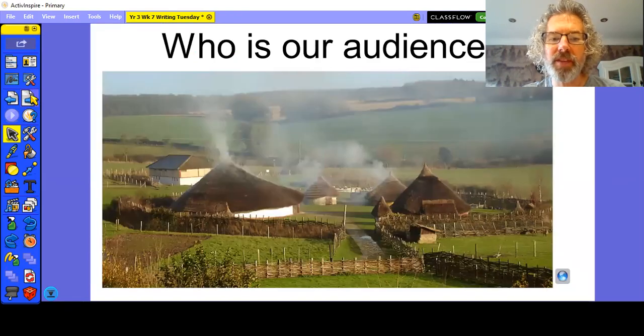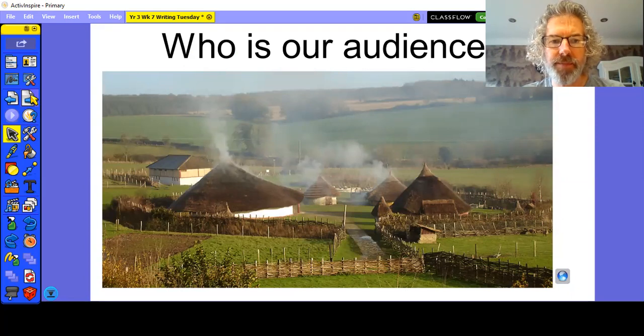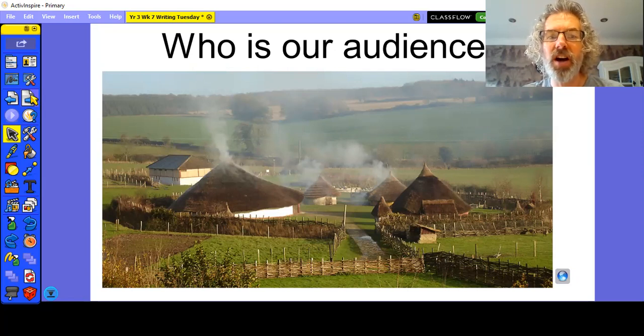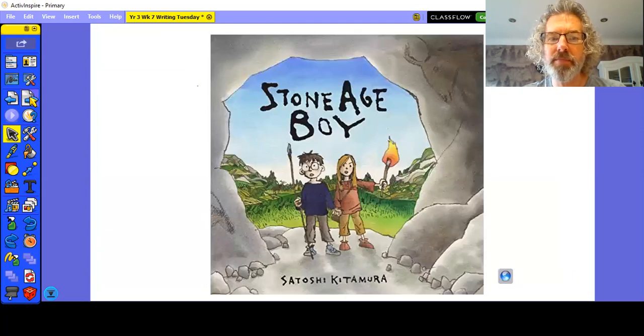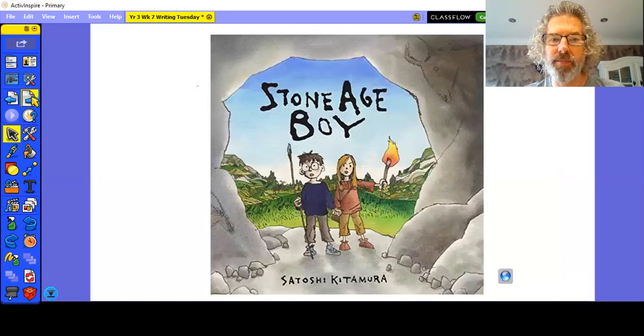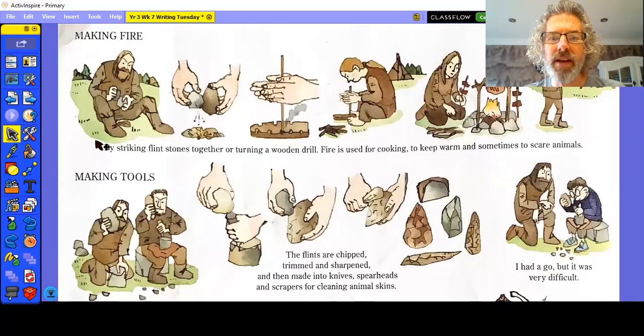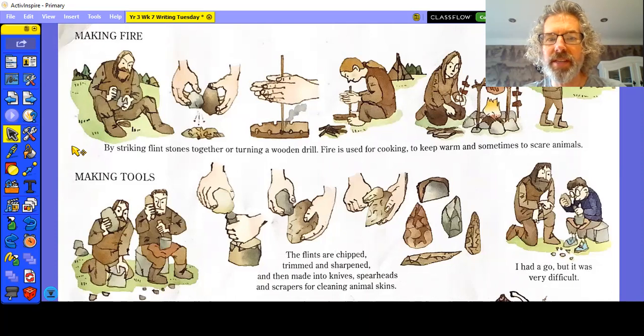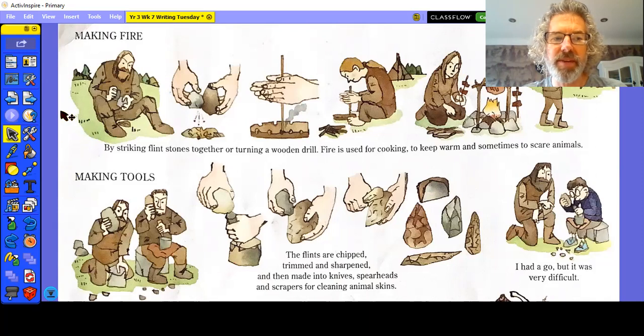If you remember from yesterday, we watched a video about Butser Ancient Farm. The people who visit this farm are learning about people from a long time ago, including the Stone Age, Bronze Age, Iron Age, and even Roman times. We're going to be focusing on writing about the Stone Age. Using this book, Stone Age Boy, as one of our sources of evidence. As well as being a story, it also contains lots of information. We realized that it's a fusion book, which means it contains facts as well as story. You should hopefully still have copies of these pages from yesterday.